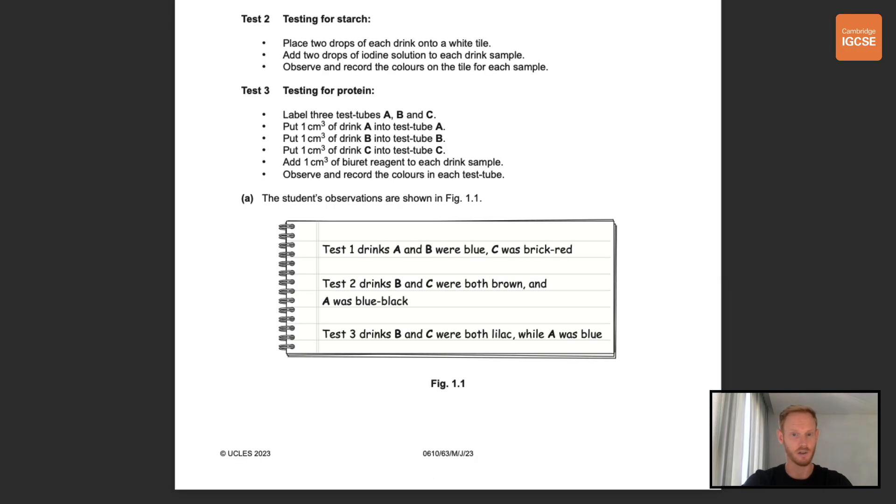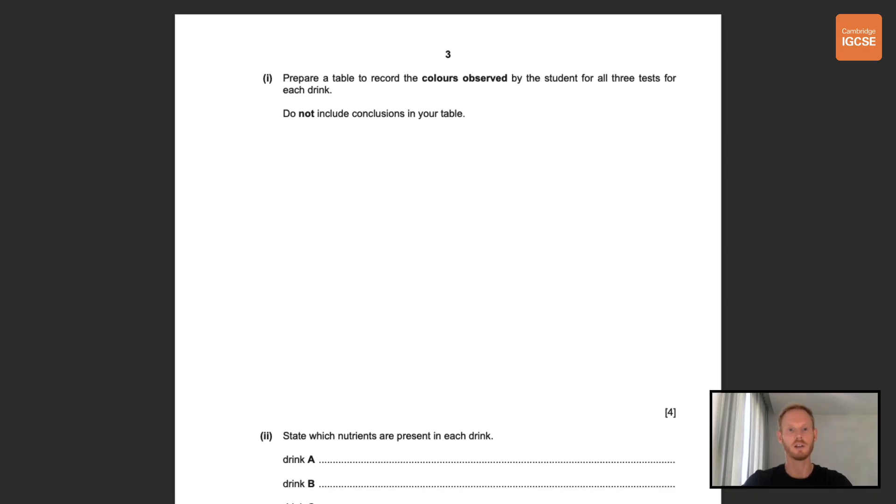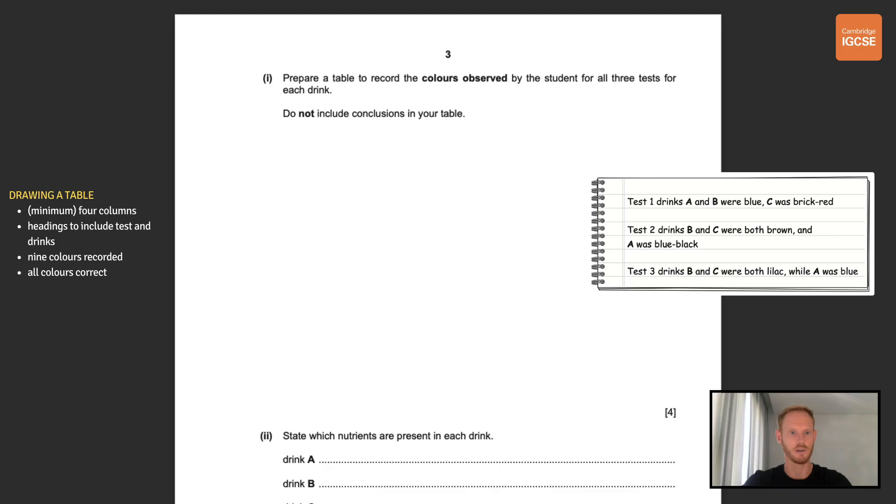The students' observations of the three tests are shown in figure 1.1. For the Benedict's test, test 1, drinks A and B were blue and C was brick red. For test 2, drinks B and C were both brown and A was blue black. And for the Bioret test, test 3, drinks B and C were both lilac or purple while A was blue. Okay the first thing that you need to do is to prepare a table and record the colours observed by the students for all three tests for each drink. Do not include conclusions in your table. So let's bring up the students' observations again.